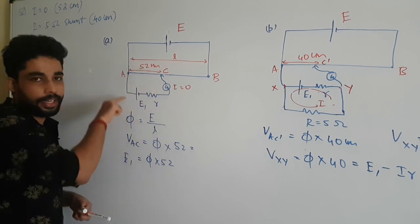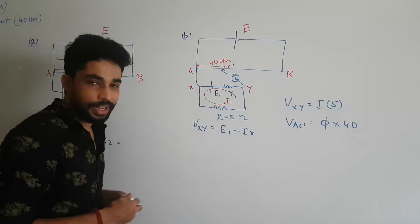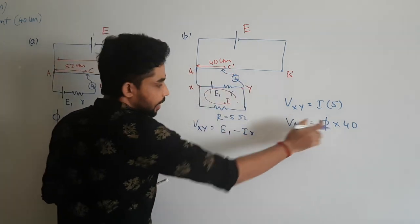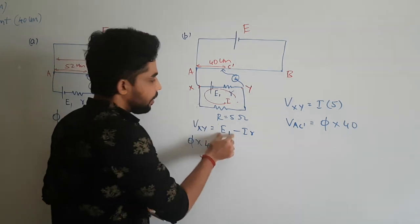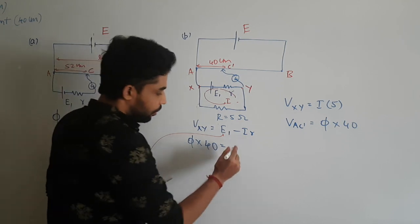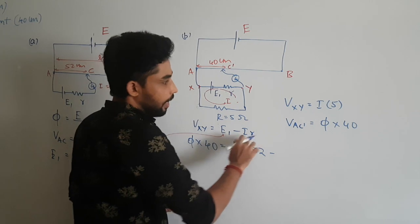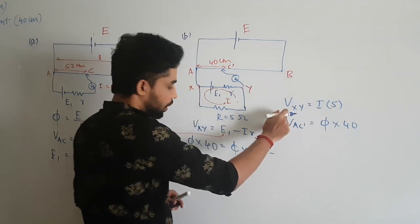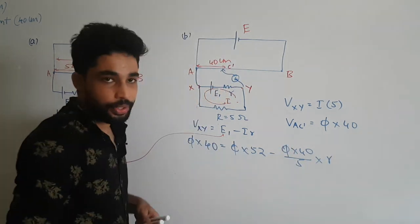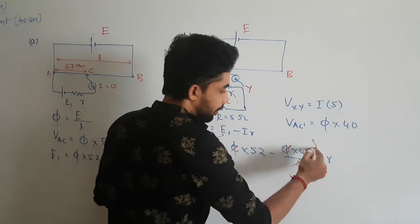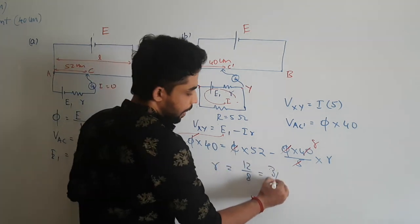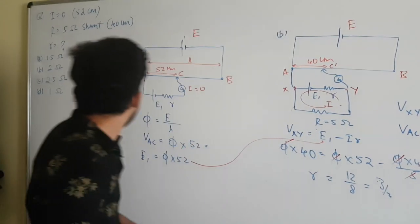So now it's just simplification. We have V_xy = e1 − I·r and V_xy = k × 40. From the first case, e1 = k × 52. The current I = V_xy / 5 = (k × 40) / 5. Substituting: k × 40 = k × 52 − [(k × 40) / 5] × r. All the k's cancel, giving: 40 = 52 − (40/5)·r, so 8r = 12, and r = 12/8 = 1.5 ohm. The correct answer is 1.5 ohm.